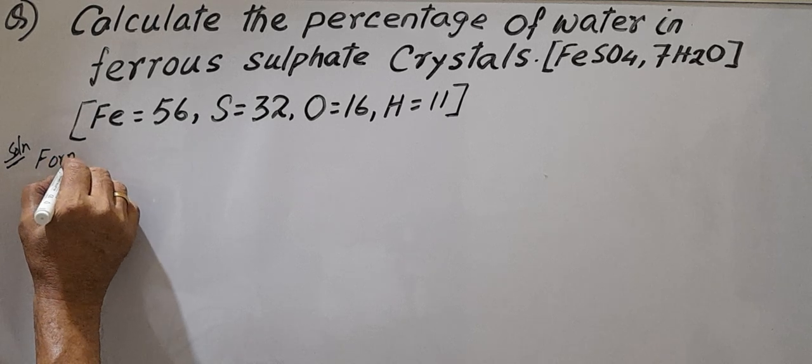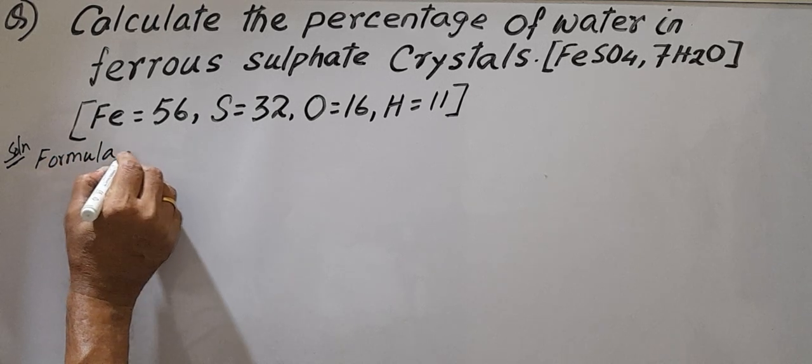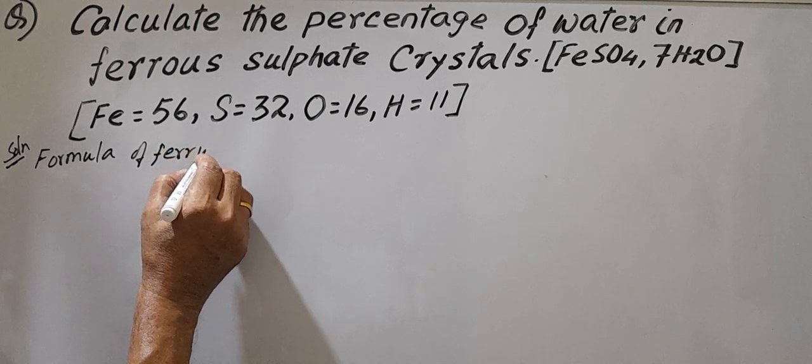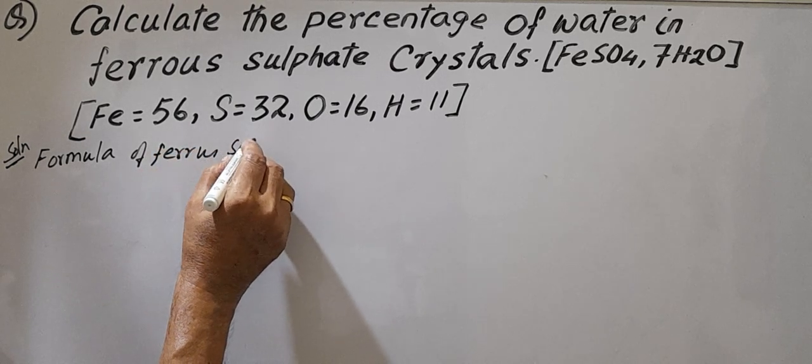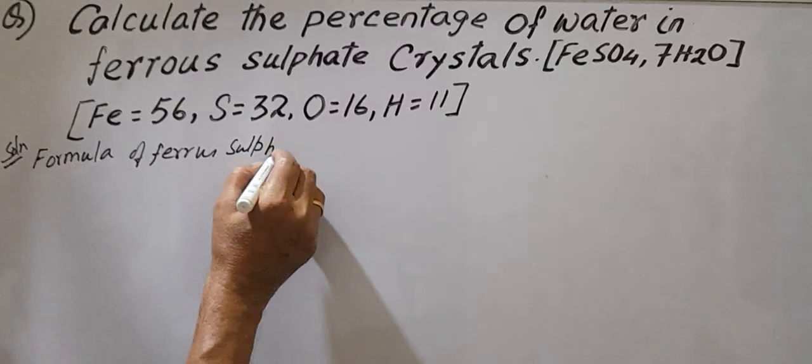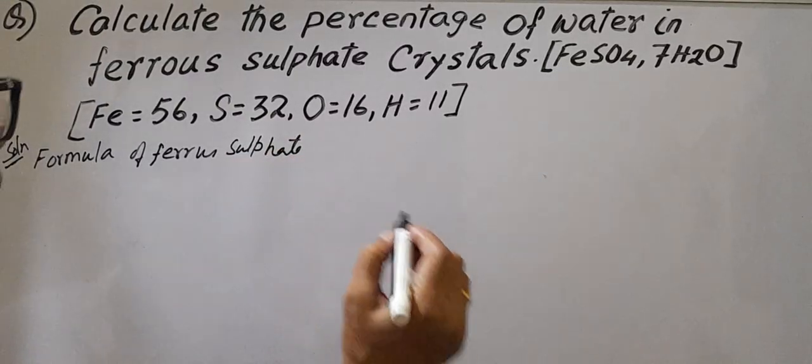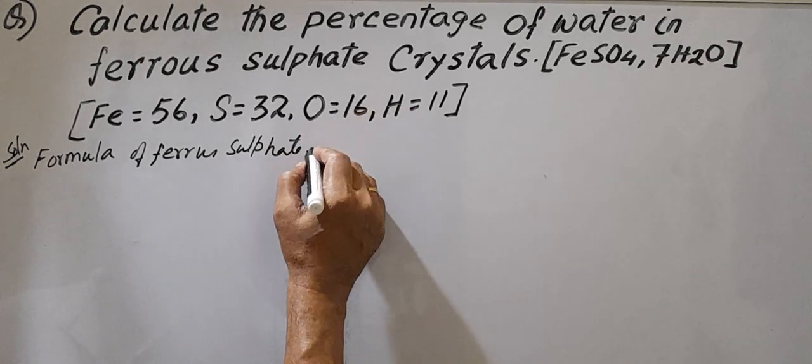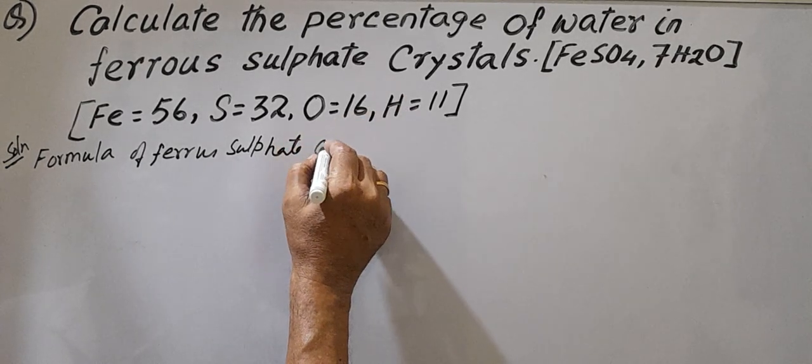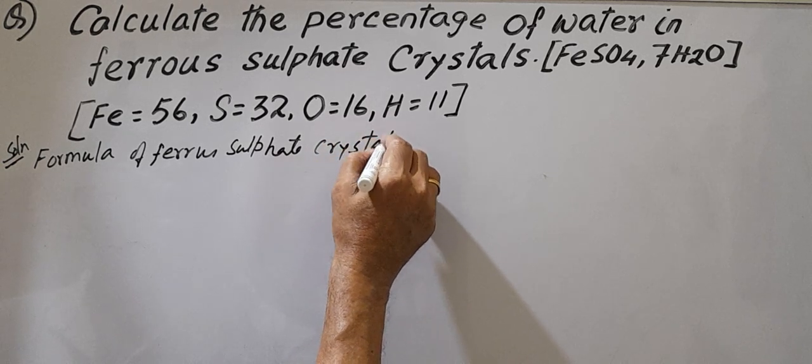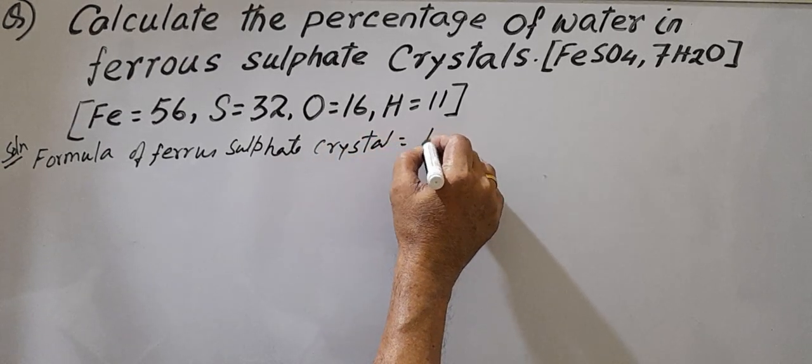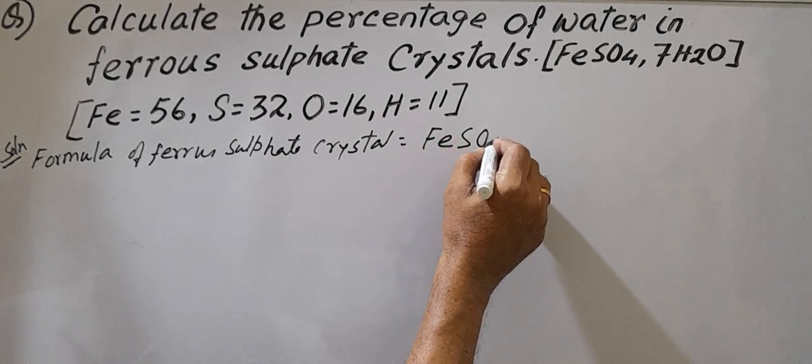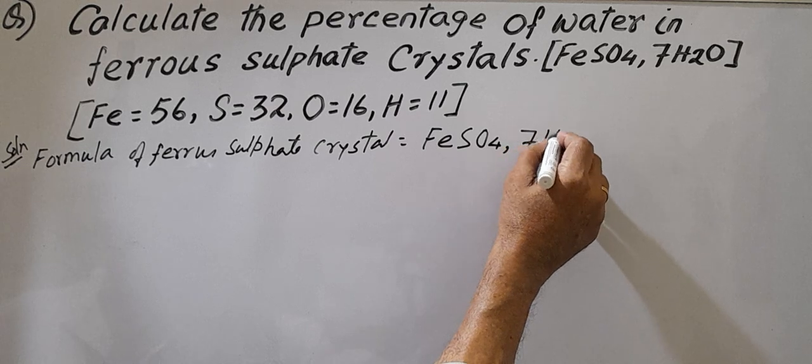Formula of ferrous sulfate - solutions, ferrous sulfate crystal, not solutions, crystal - equal to FeSO4·7H2O. That means total is the ferrous sulfate.